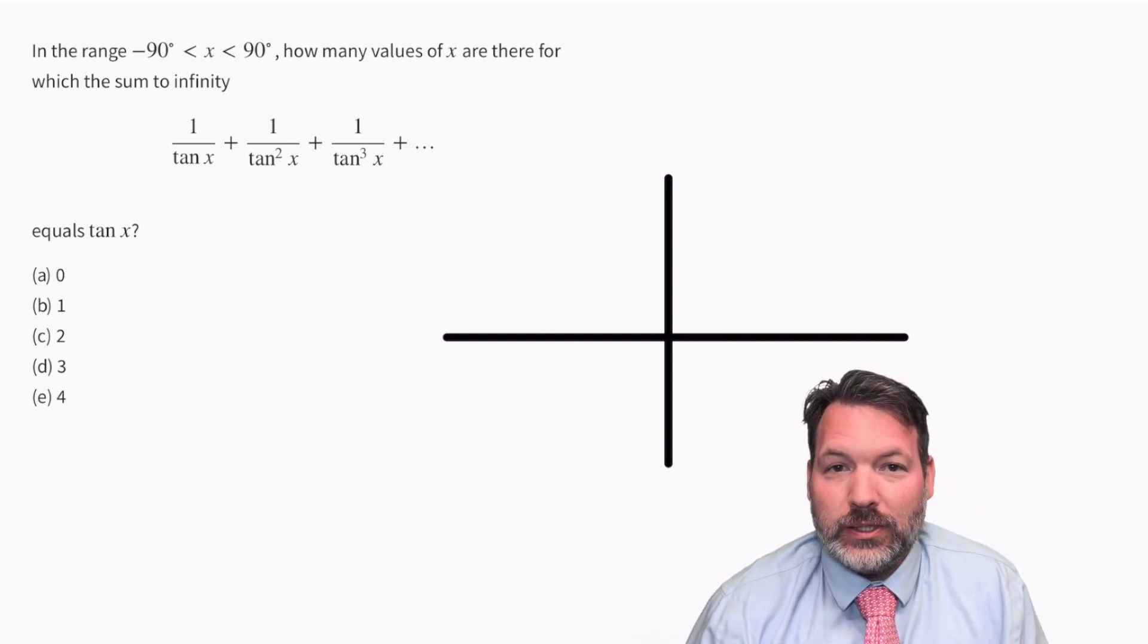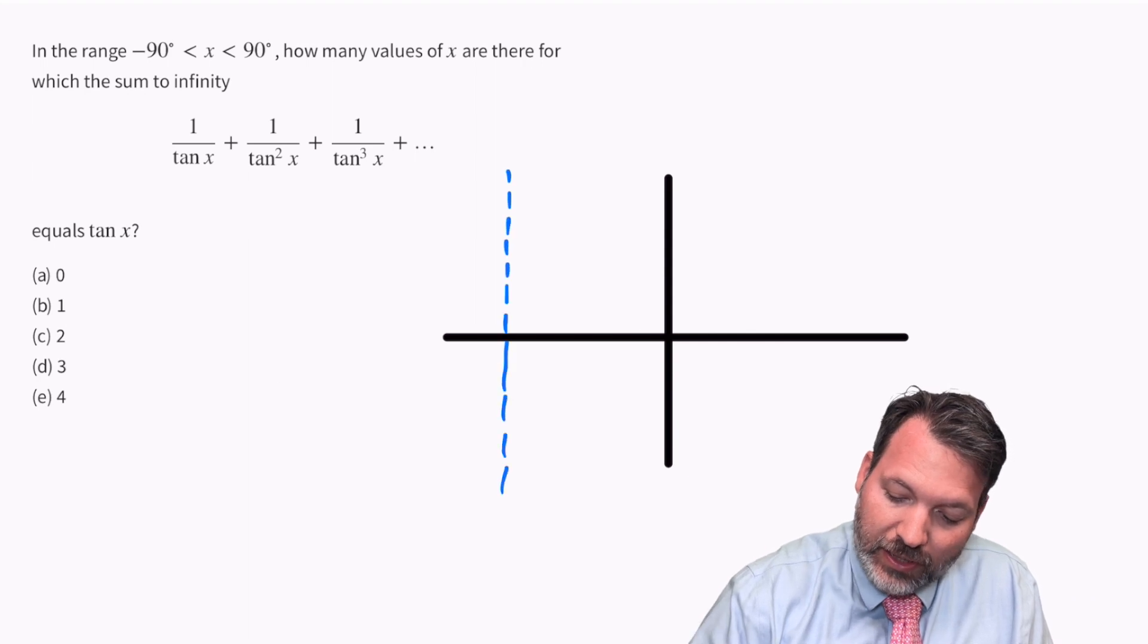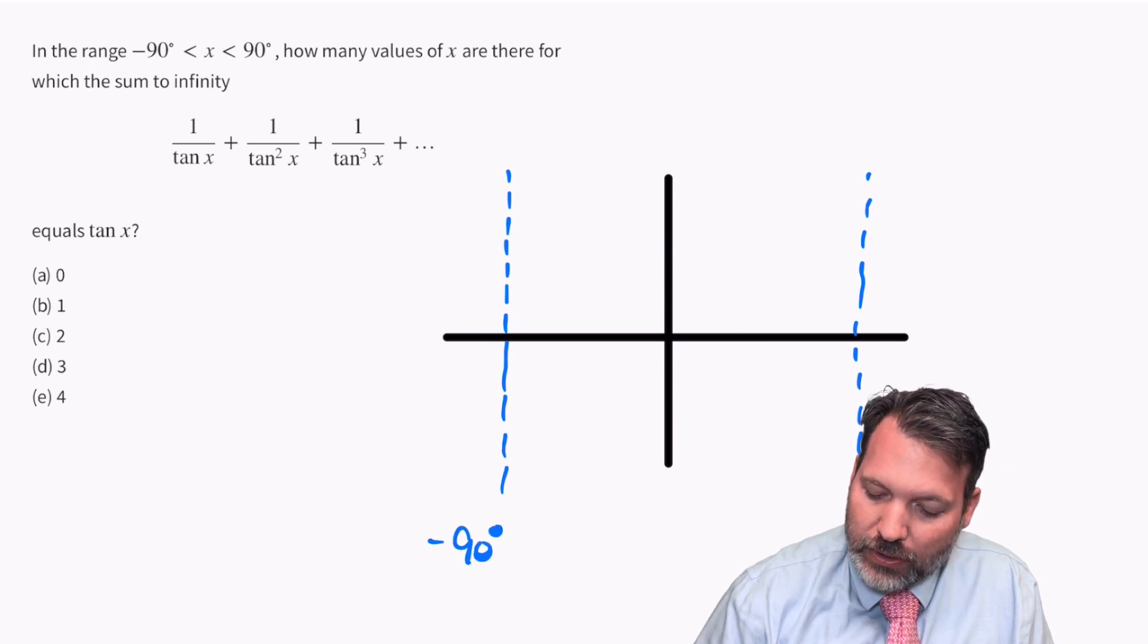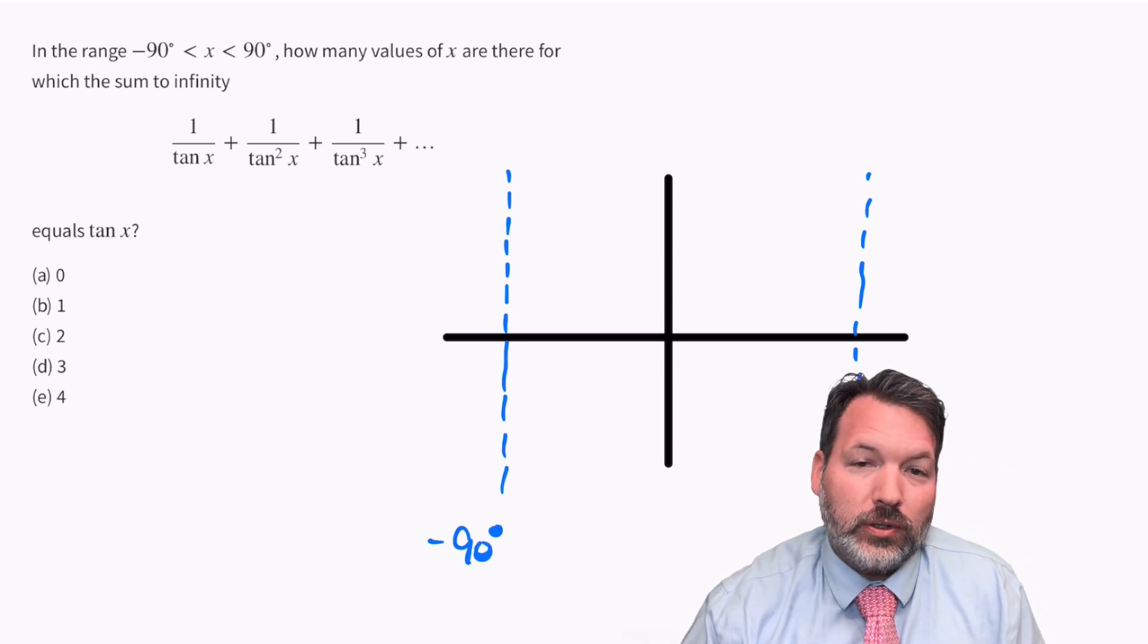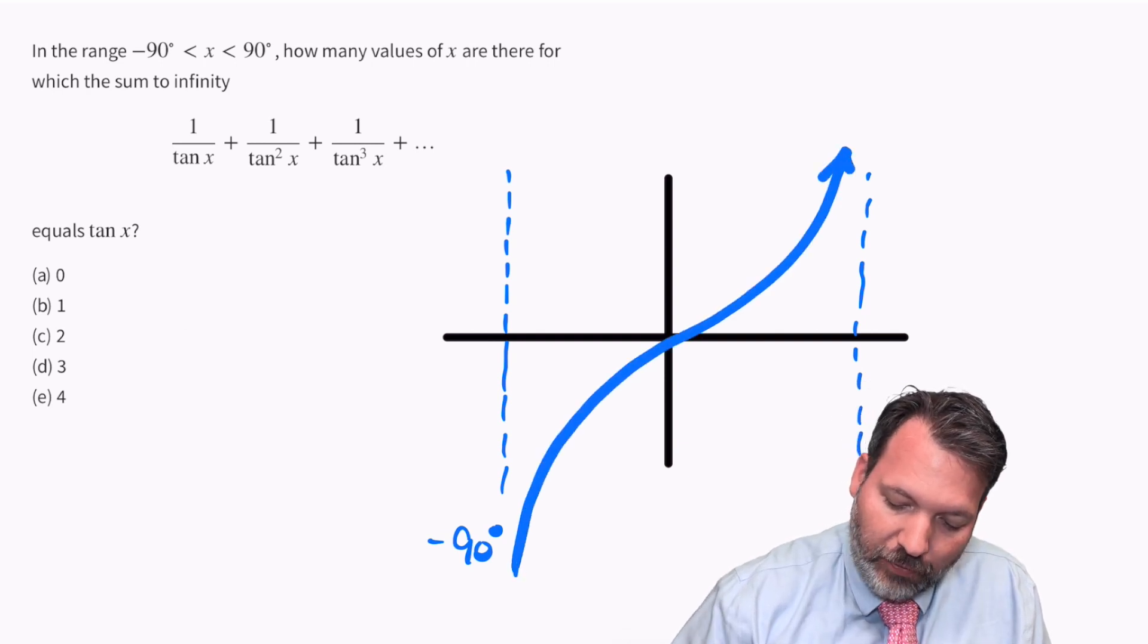But I do have a pretty good idea of what tangent x looks like. And so I'm going to sketch that out real quick. Essentially what this problem is saying is on that interval from negative 90 degrees to positive 90 degrees, which are two asymptotes for tangent, we've got our tangent curve itself.